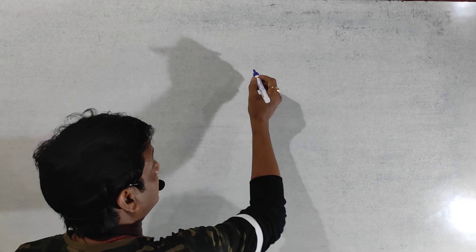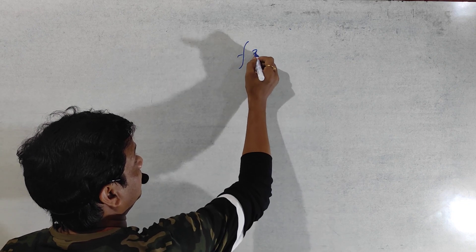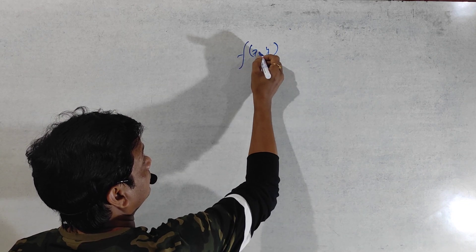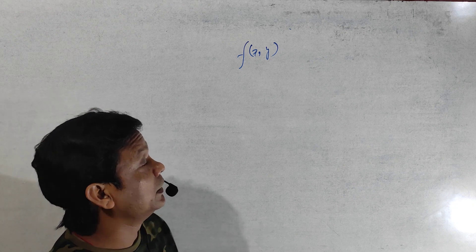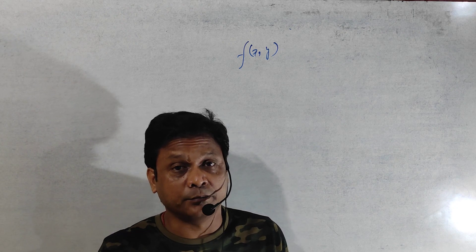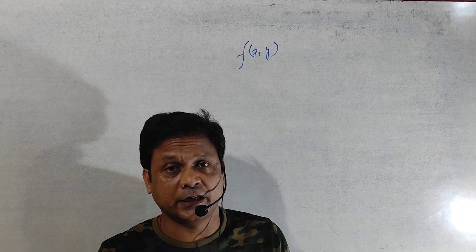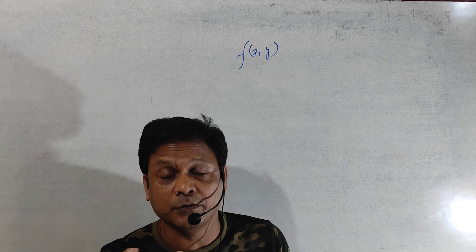Today I will tell you about simultaneous limit or double limit. It is applicable to functions of several variables, that means a function should contain more than one variable. Basically it contains two variables, and that is a function of x and y. The name specifically indicates that it is a double limit or simultaneous limit.